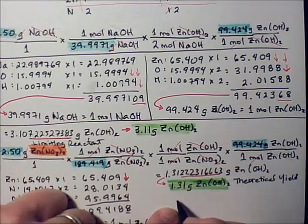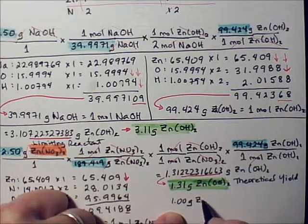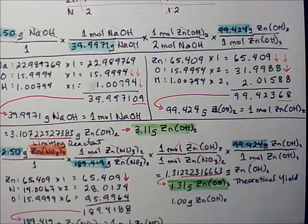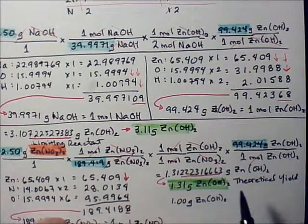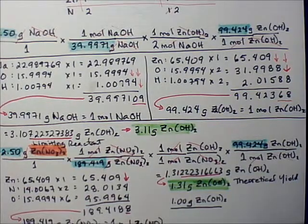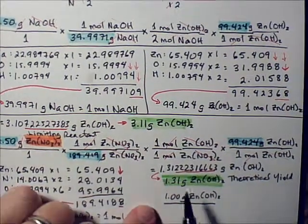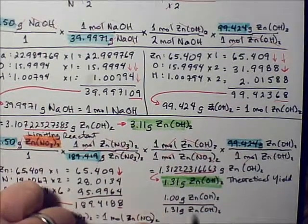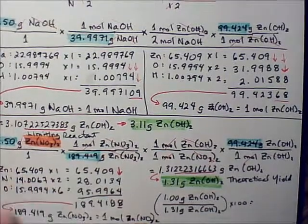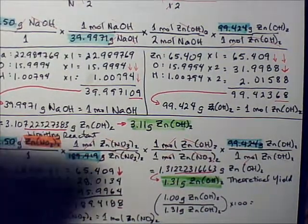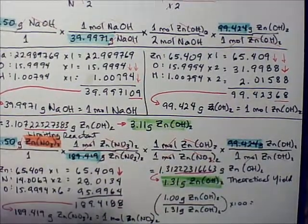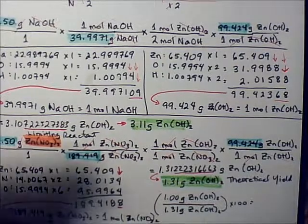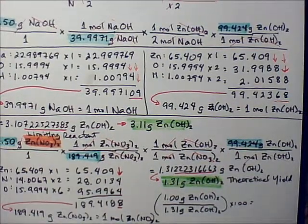So, we're going to take that actual yield, 1.00 grams of zinc hydroxide. And we're going to put it over the theoretical yield. Well, what was the theoretical yield? Right there. We're going to divide those and multiply by 100. Why do you multiply by 100? That's how you get a percent. All percents are the fraction times 100.